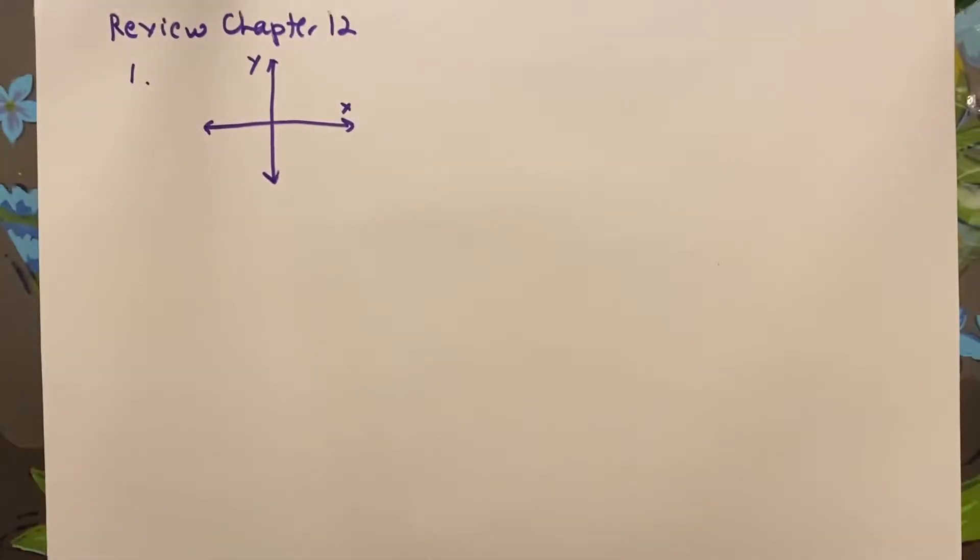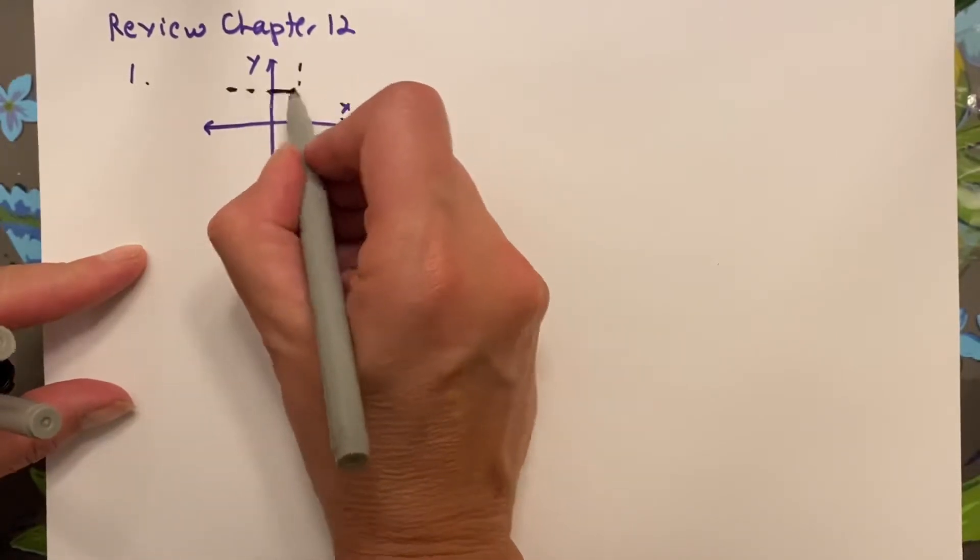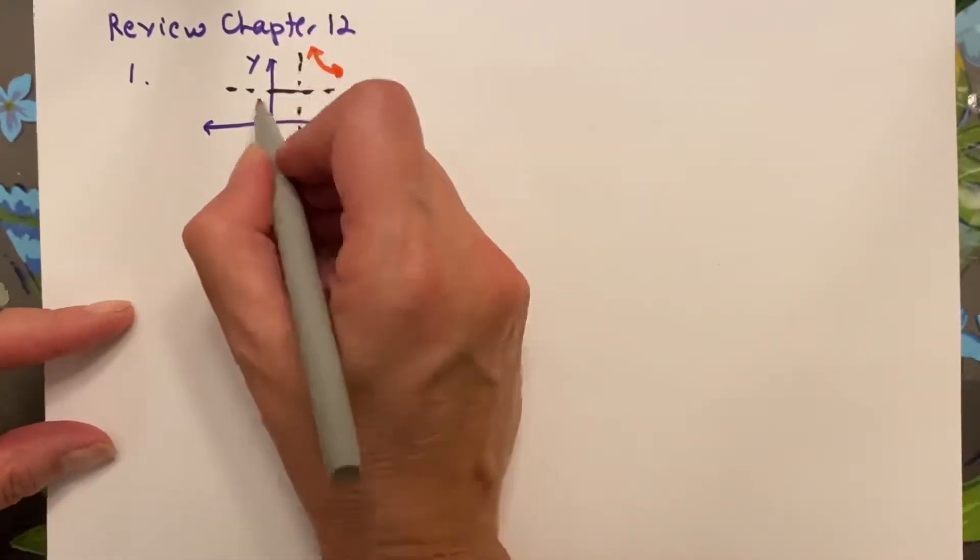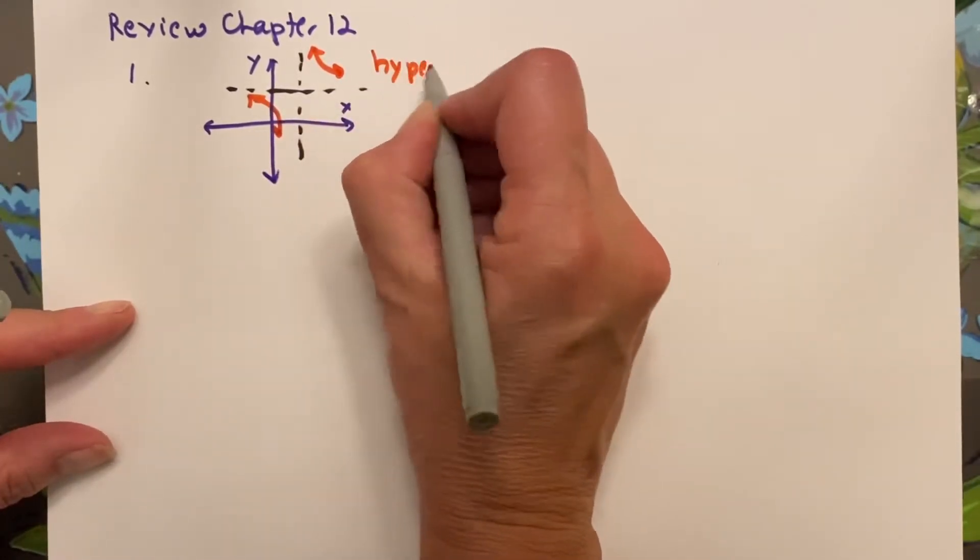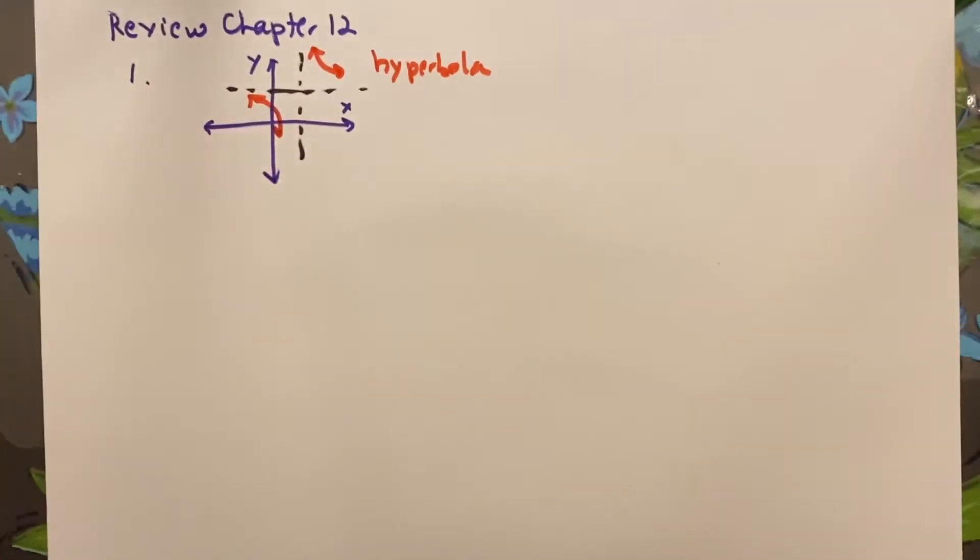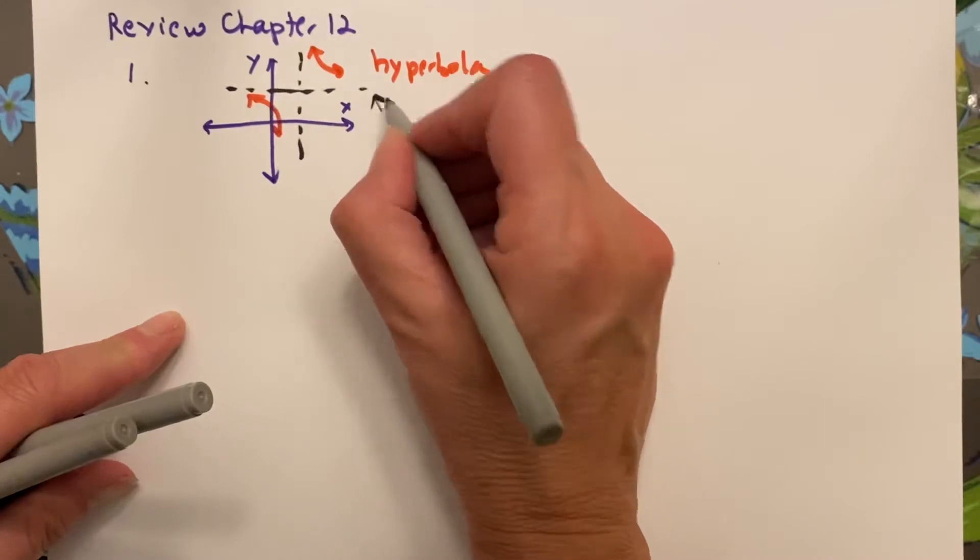But while I'm drawing it, I'm going to draw those lines that the hyperbola approaches but doesn't intersect right here. And I'm going to draw the branches of the hyperbola.